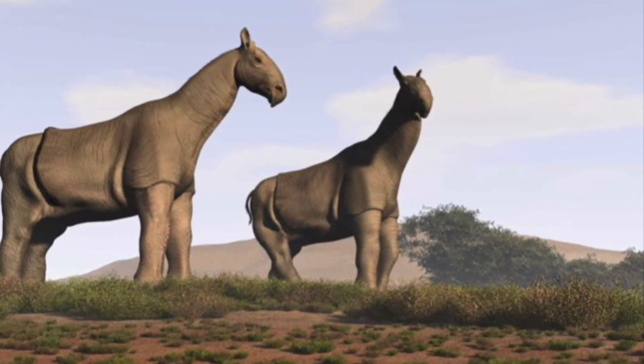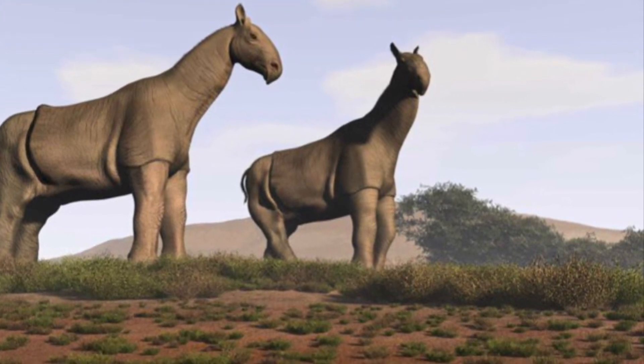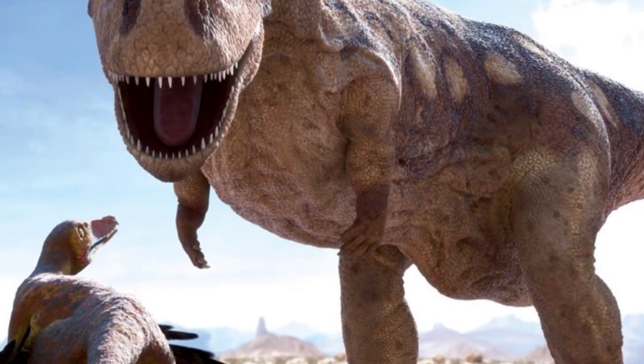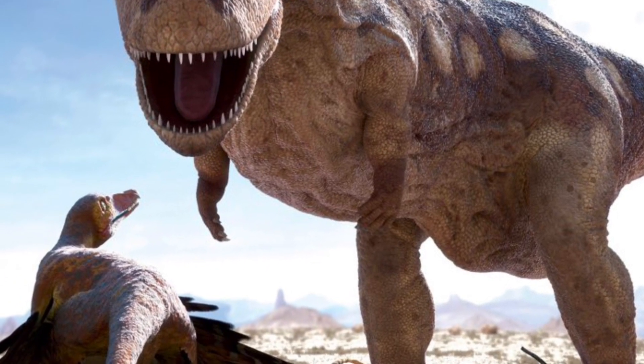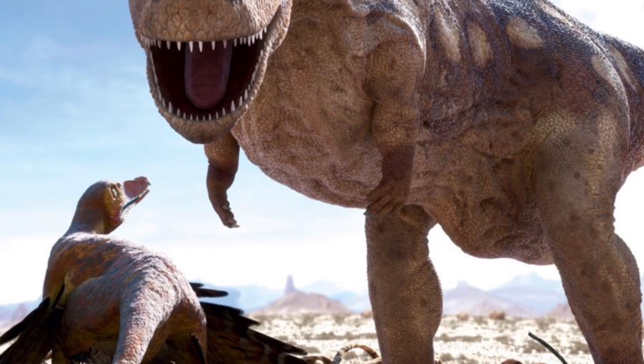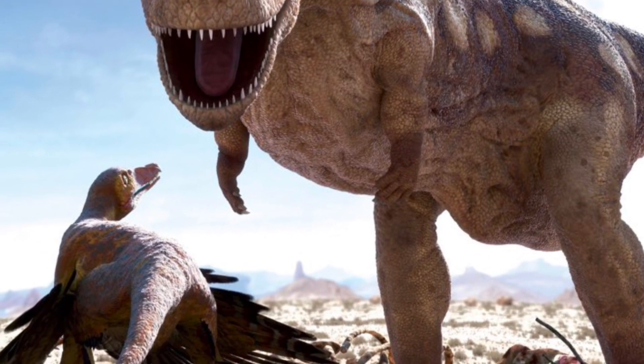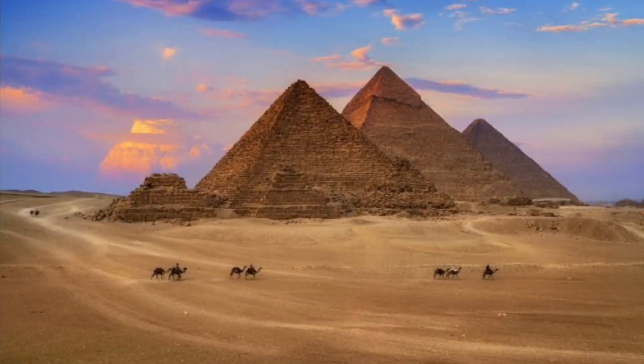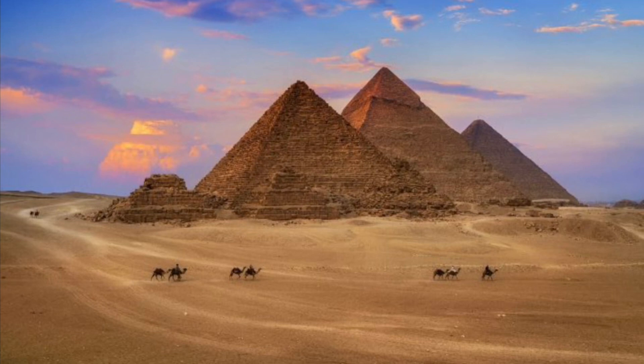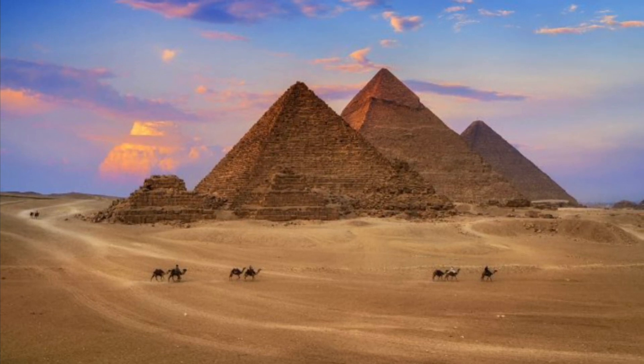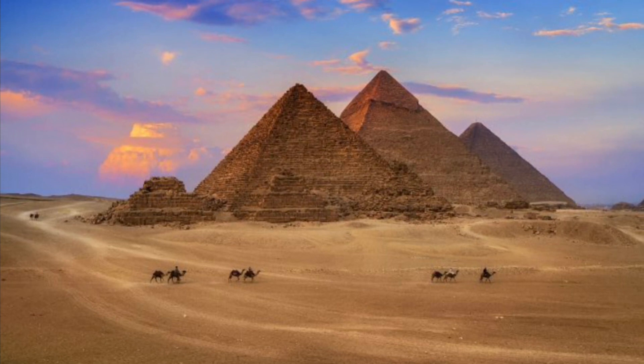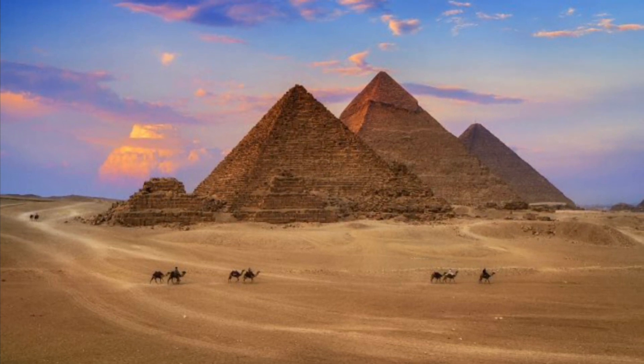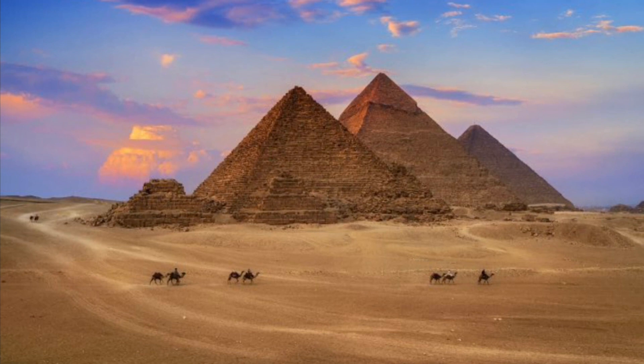Animals began to walk the earth in mid-December. Dinosaurs were born the day after Christmas, and they went extinct yesterday. The most incredible thing about this calendar is that humans only show up in the last half a second, with the Egyptians building the pyramids only 11 seconds ago.